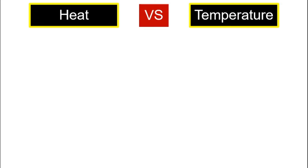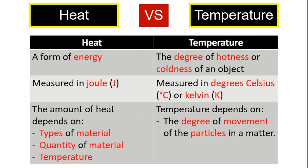So here is the summary. This table is very important — the comparison between heat and temperature. First, what is heat and what is temperature? Heat is a form of energy, whereas temperature is the degree of hotness or coldness of an object. Second, what are the units of heat and temperature? For heat, it is measured in Joules. And temperature is measured in degrees Celsius or Kelvin.